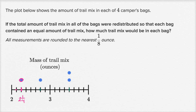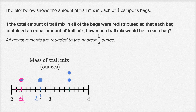Now we have this bag right over here. How much is in this bag? Counting the eighths: one eighth, two eighths, three eighths, four eighths, five eighths, six eighths. So that's going to be two and six eighths. Six and eight are both divisible by two, so if you divide them both by two, that's the same thing as three fourths. So that's the same thing as two and three fourths.